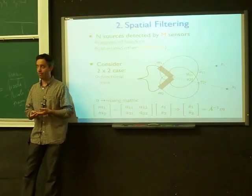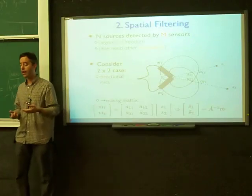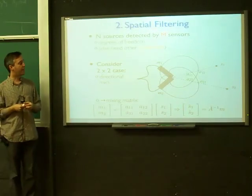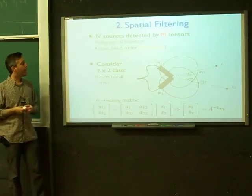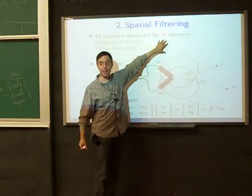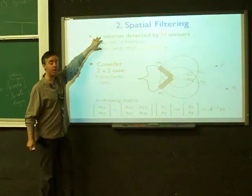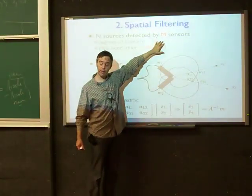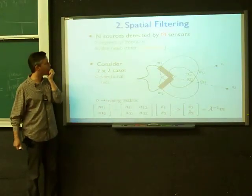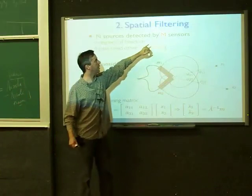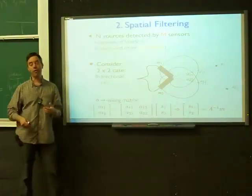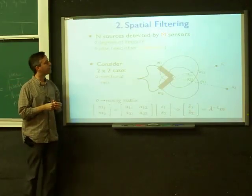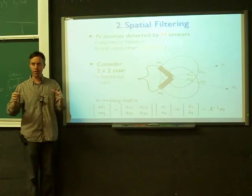Now for the converse problem: taking a sound with multiple sources and picking out individual pieces. The first approach is spatial filtering, assuming we have M microphones. The number of microphones gives us the degrees of freedom — more sensors means more processing we can do. We have two dimensions to the problem: the number of microphones and the unknown number of sources.